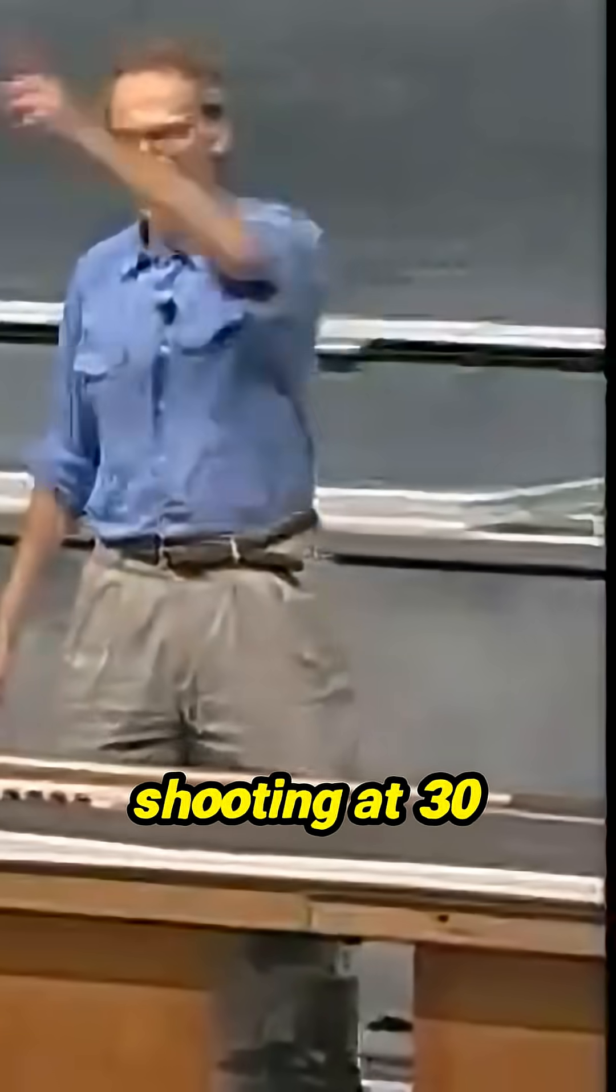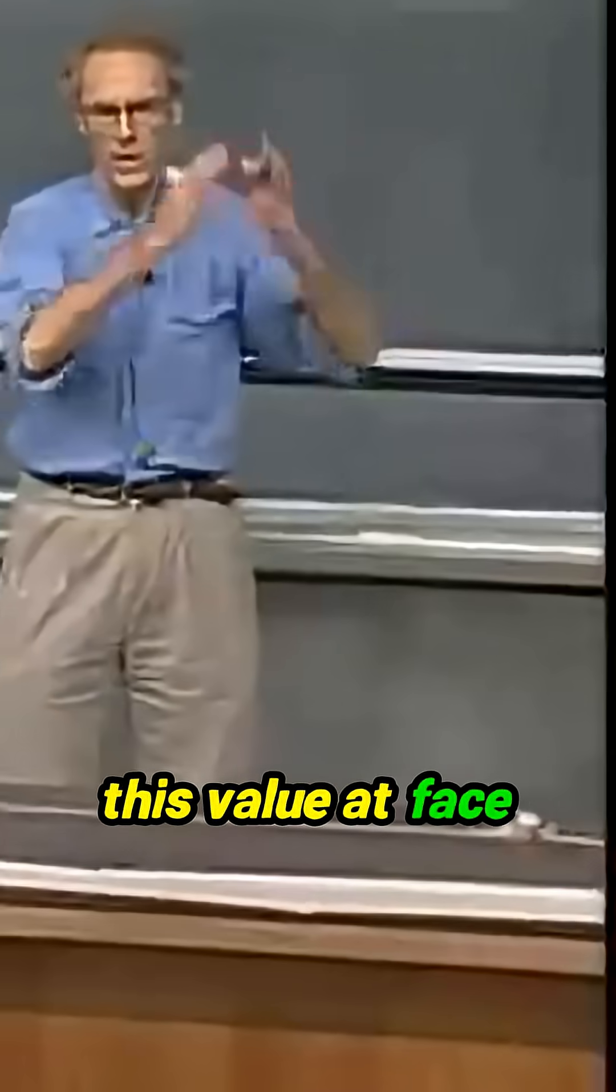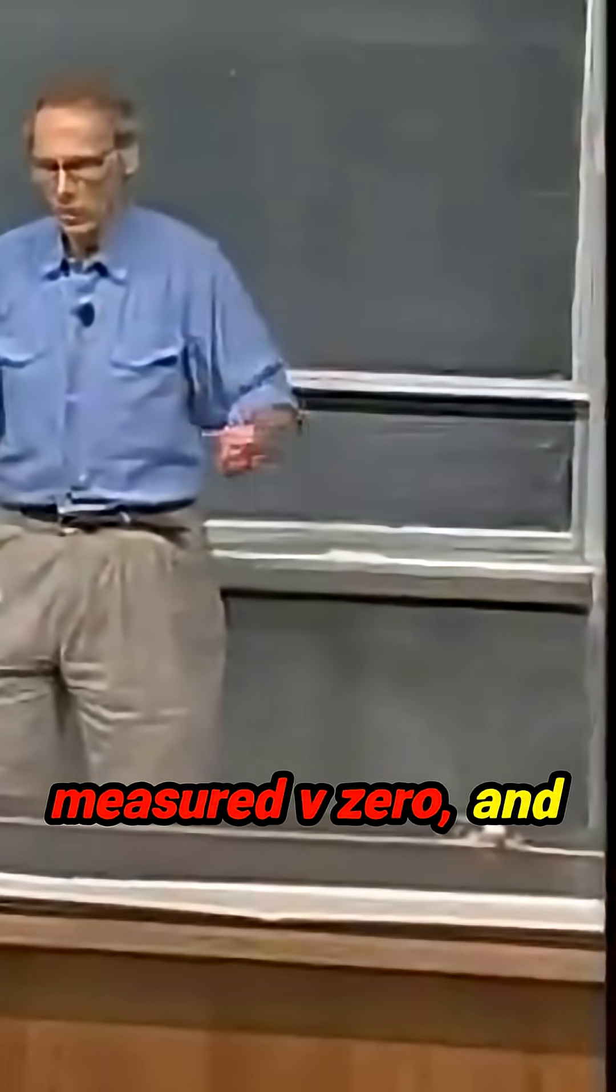Remember, once we start shooting at 30 degrees, there's no way that we can evaluate the velocity anymore. We have to just take this value at face value. This is the way we've measured V zero, and that's it.